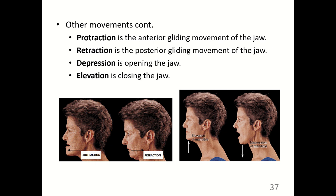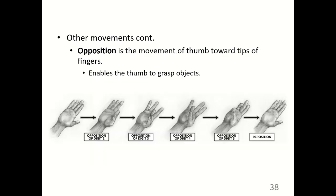Protraction and retraction, along with depression and elevation, are shown here referring to the jaw. Protraction is the anterior gliding movement of the jaw, while retraction is the posterior gliding movement. Elevation is the closing of the mandible and depression is the opening of the mouth. The jaw can also glide side to side. The jaw is a less stable joint and is often dislocated.